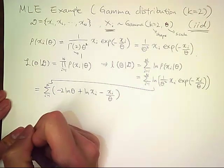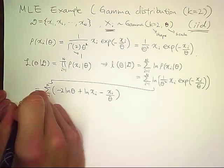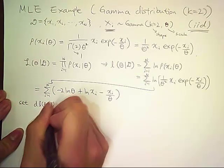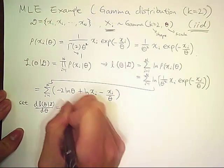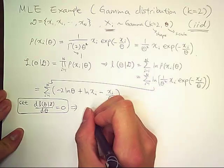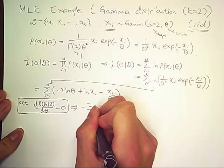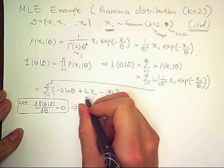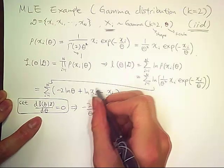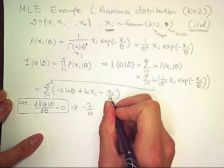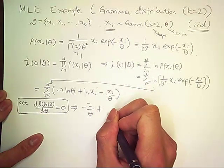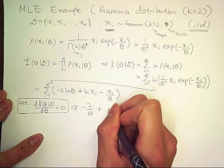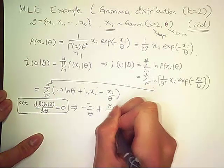Now we should take the gradient of this log likelihood and set it to 0. Then this becomes negative 2 over theta. And this is not dependent to beta, so this will disappear. And then plus x sub i over theta squared.